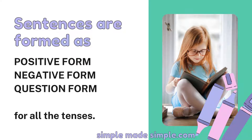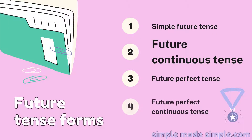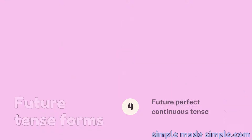Sentences are formed as positive, negative, or question form for all the 12 tenses. There are four forms of future tense. They are simple future, future continuous, future perfect, and future perfect continuous.